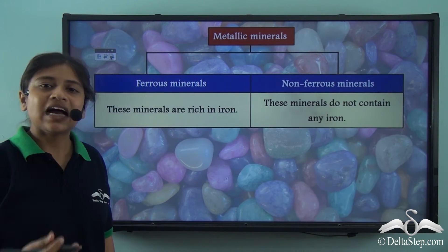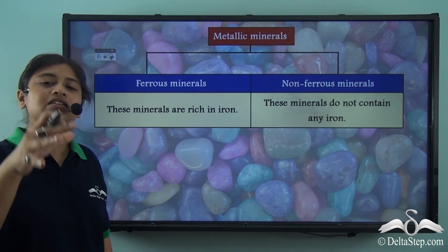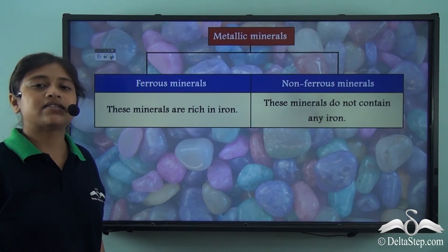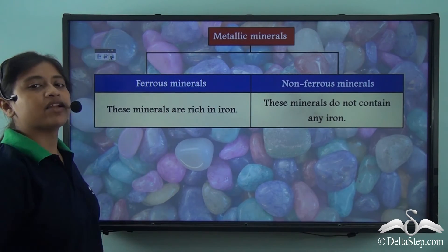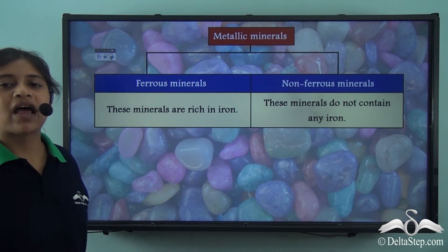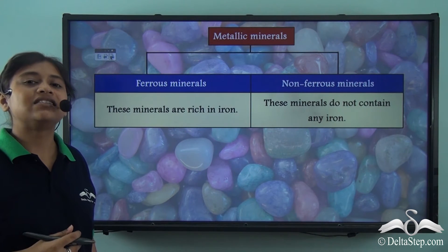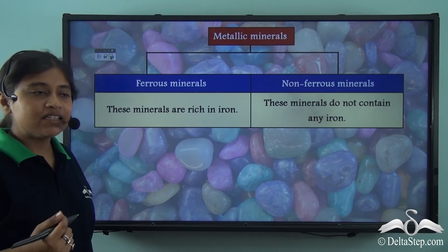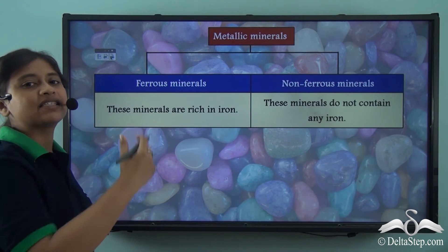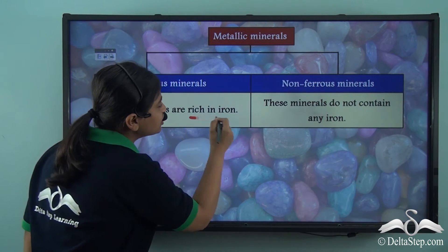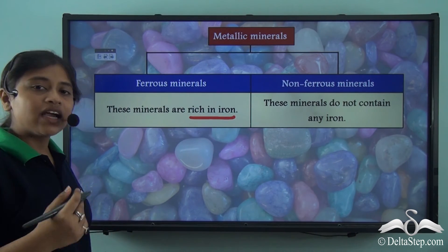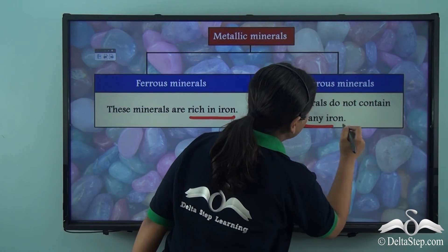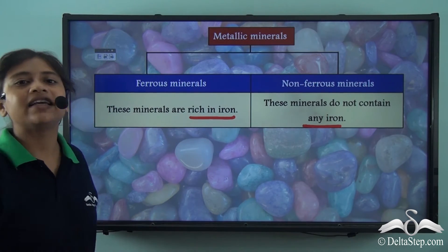Metallic minerals can be further subdivided into ferrous and non-ferrous. Ferrous is the scientific name for iron, which simply means that ferrous metallic minerals are rich in iron. On the other hand, non-ferrous metallic minerals do not contain any iron.